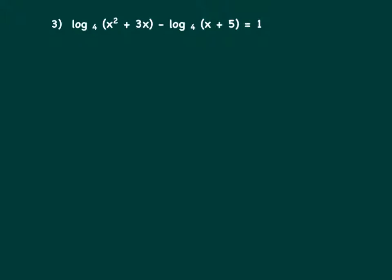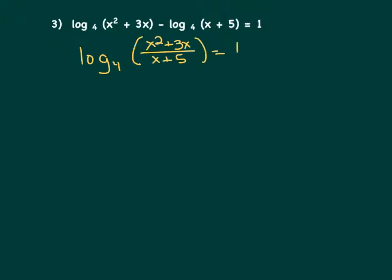Let's try one more example. This one starts off the same as number 2 — we have logs on the left-hand side of the equation, but not the right. This time we can combine these two expressions using division, since this is subtraction. We divide (x squared plus 3x) by (x plus 5) to make one single log term. Now that we have one single log term on the left, we can circle the base and run the race. We're left with (x squared plus 3x) over (x plus 5) equals 4 to the first power.